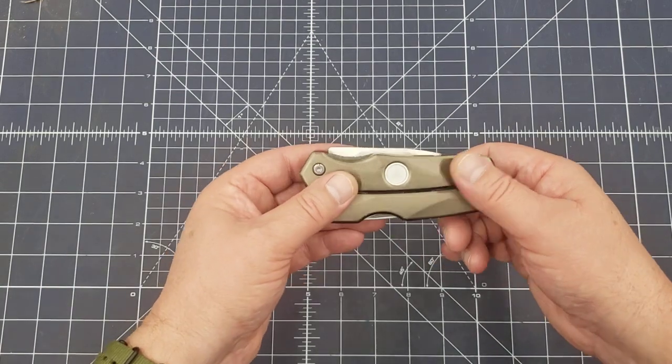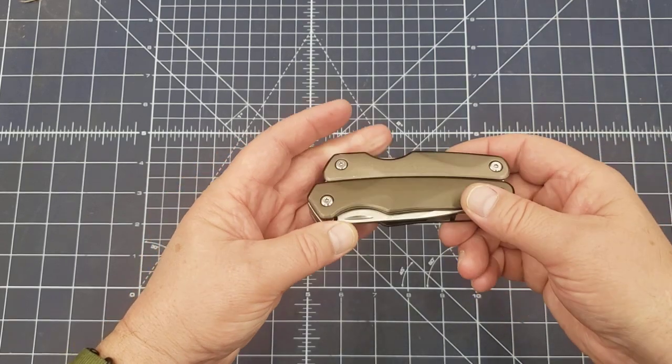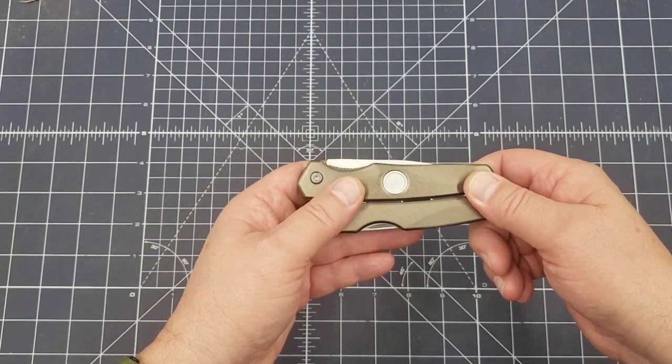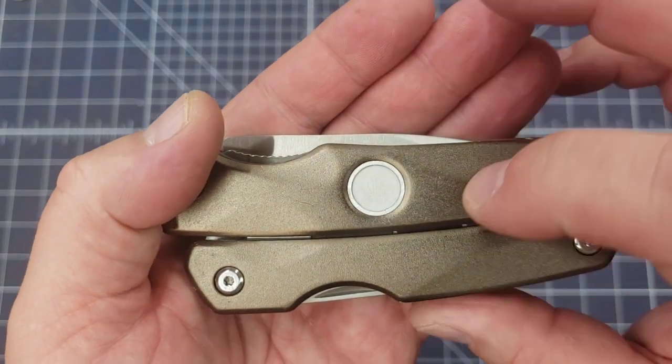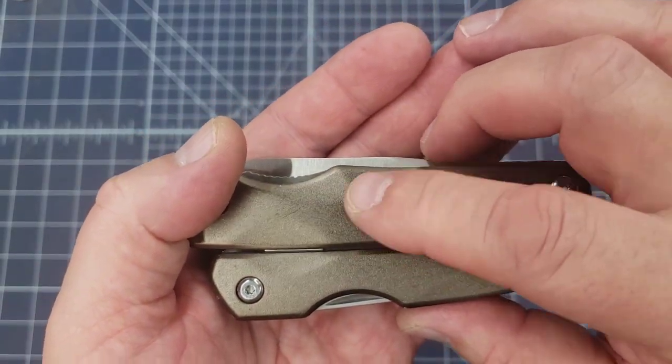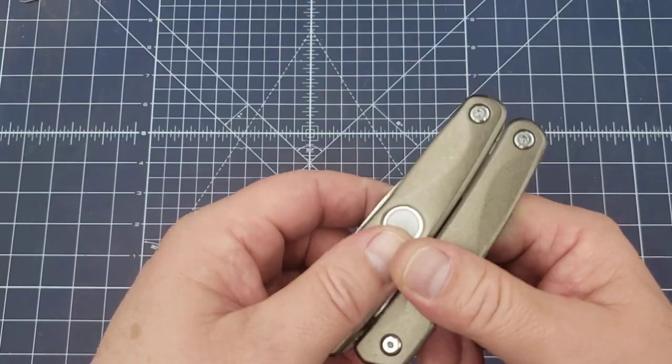So you're asking, well, how is it readily available? Well, this guy right here actually came from AliExpress. And if you take a look right here, what they've done, the Klein logo was right here in the handle.